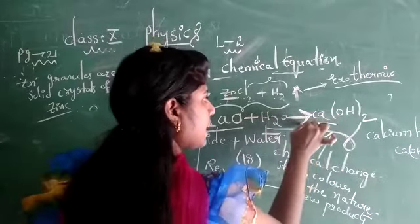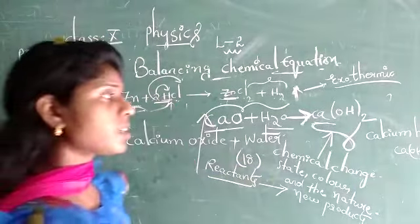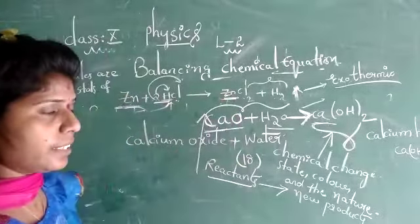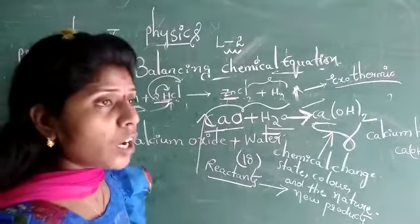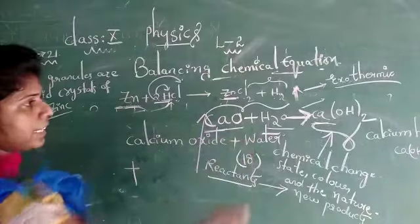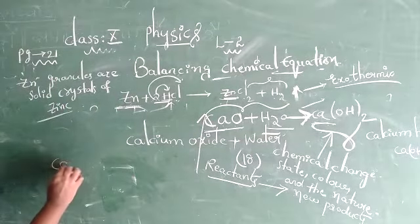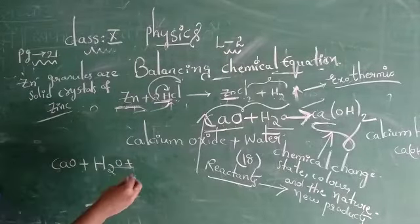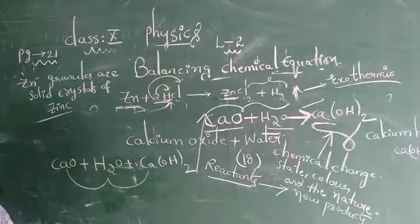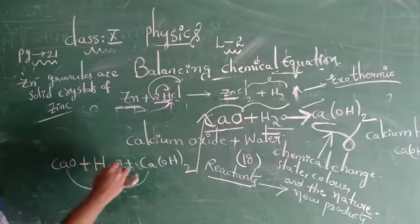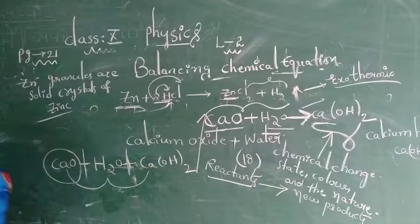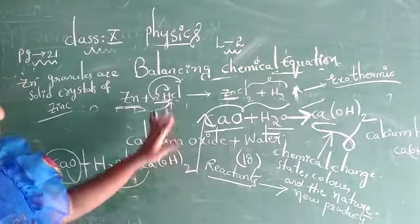This arrow mark indicates the direction of the reaction, whether it is a physical change or a chemical change. If there is more than one reactant involved in the chemical reaction, we must place a plus symbol after the completion of one element. If we are combining two or three different elements, after completion of one element we place the plus symbol — this is a sign indication in the chemical reaction.